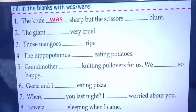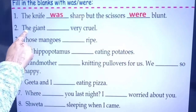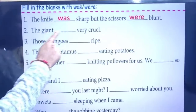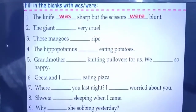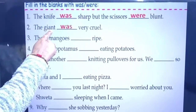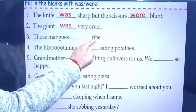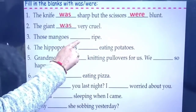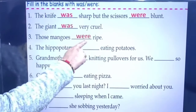But the scissors were blunt — scissors is in plural form, so we use were. Second: 'The giant ___ very cruel.' The subject giant is singular, so we write: the giant was very cruel. Third: 'Those mangoes ___ ripe.' Mangoes is in plural form, so we use were: those mangoes were ripe.